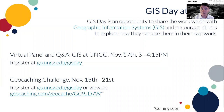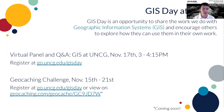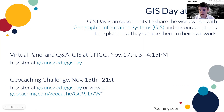At UNCG, GIS Day is an opportunity to share the work that we do with GIS, or Geographic Information Systems, and to encourage others to explore how they can use these systems in their own work. Later this afternoon, there's going to be a panel and Q&A of UNCG students, staff, and faculty who use GIS. We also have a geocaching challenge going on — I have hidden three containers around campus called geocaches. The goal is to find these geocaches using their coordinates. That's going on until November 21st at 1 p.m., and after that the geocaches will be live on geocaching.com. You can register for both of these events at go.uncg.edu/gisday.